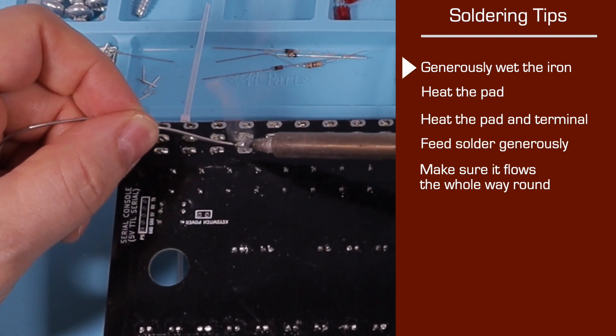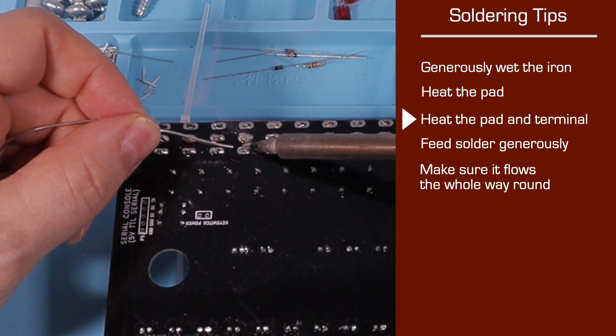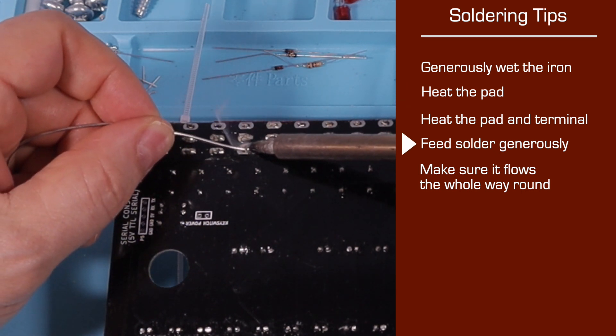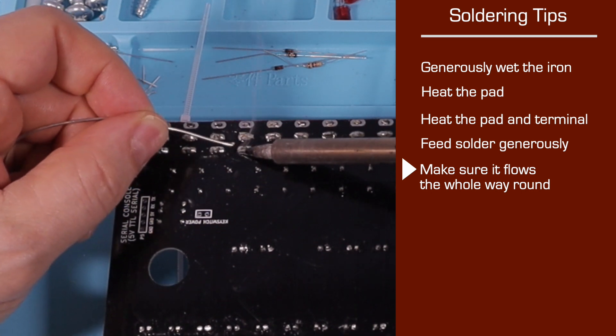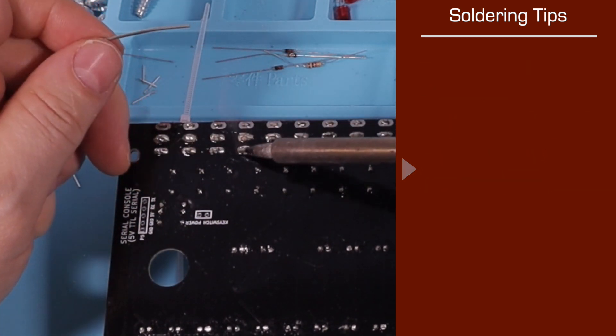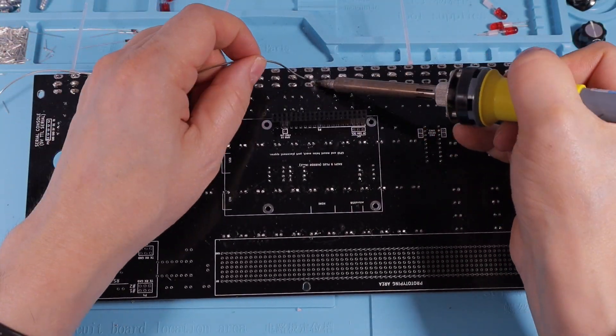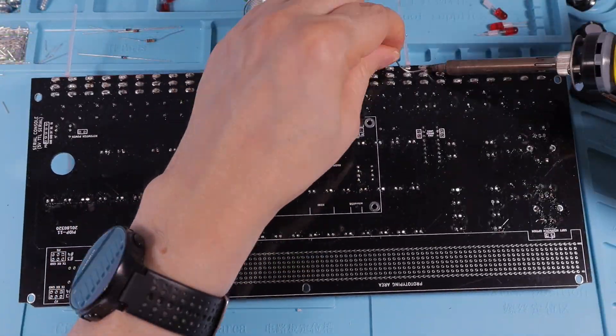So I tended to load the iron up first, heat the pad, and then move to the terminal and feed as much solder as I could. Since the iron is on one side of the pin, it's basically ready when the solder flows the whole way back around the pin. Because I'm pretty poor at this, I made a lot of touch-ups anyway. But this is the basic approach that got me through.